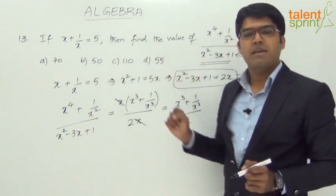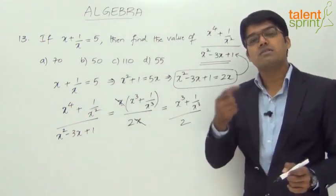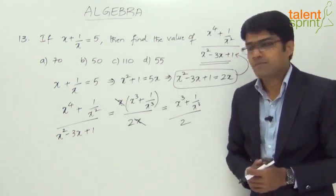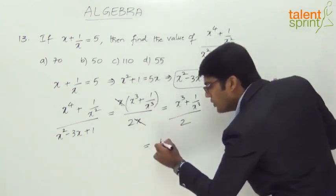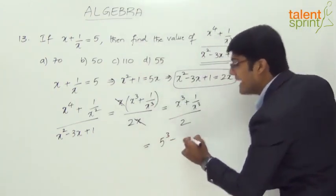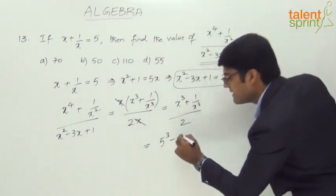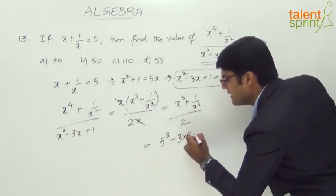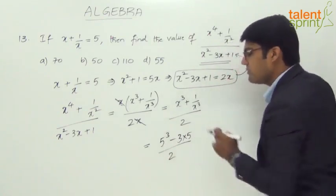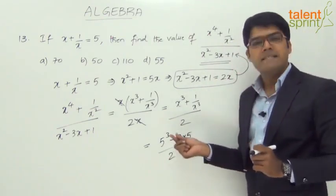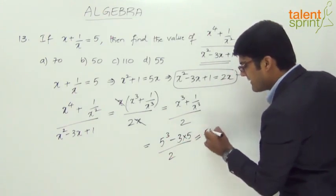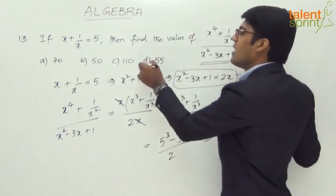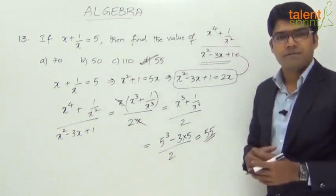What do we know? x plus 1 by x equal to 5. Now, we can use the identities that we have discussed. x cube plus 1 by x cube can be taken as x plus 1 by x whole cube. So, 5 cube minus 3 into x plus 1 by x. So, 3 into 5 divided by 2. So, 5 cube is 125. 125 minus 15 is 110. 110 upon 2 will give us 55. So, the answer for this question is option D, 55, alright?